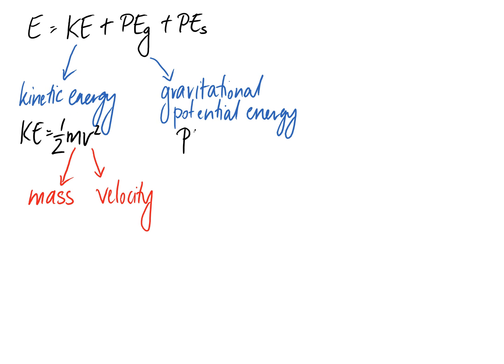So gravitational potential energy can be calculated as mgh. So again, m is your mass, g is gravity, so 9.8 metres per second squared, and h is your height.